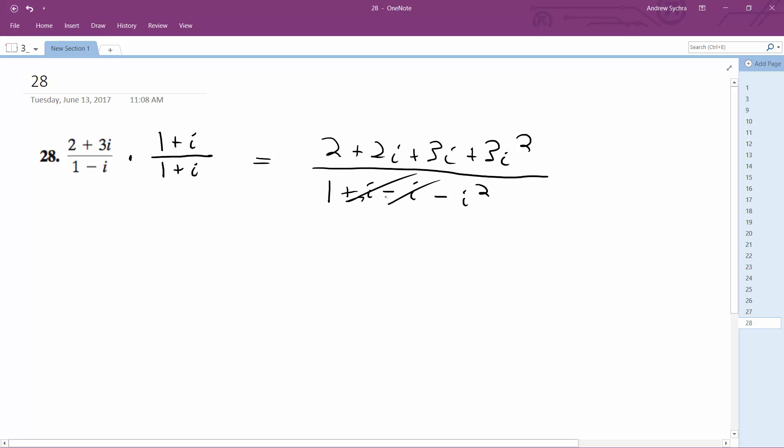These two terms cancel out, and then what we're left with at the top is 2 plus 5i minus 3, because the i squared becomes negative 1. And then on the bottom, we get 1 minus i squared, which is negative 1, so it becomes plus 1.